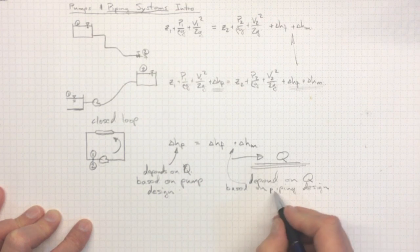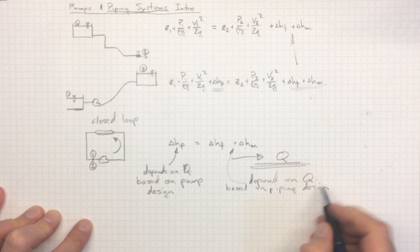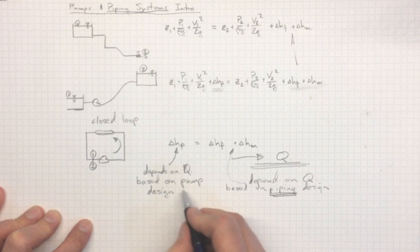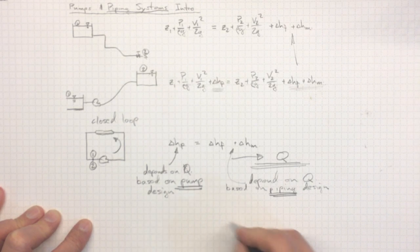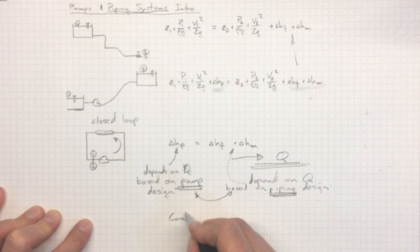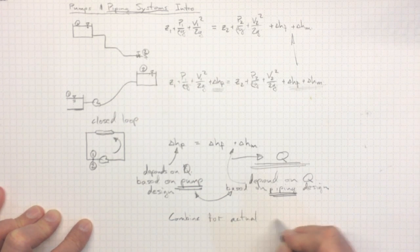We're looking over here, the losses due to friction and minor losses will depend on the piping design. The head rise across the pump will depend on the pump design. And the interaction between the two, we'll have to combine to solve for actual operating.